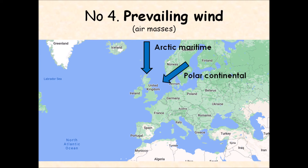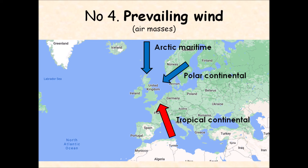Moving clockwise, the second air mass is the polar continental air mass — polar because it's from the poles, continental because it has travelled over land. It typically travels from central Europe, bringing dry summers but cold and potentially snowy conditions in winter. The third is the tropical continental air mass — tropical because it's from the warmer areas close to the equator, continental because it has travelled over land, typically arriving from North Africa and bringing hot, dry air and lovely warm weather in summer.